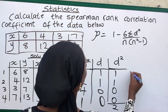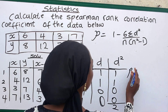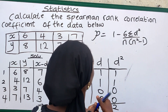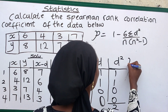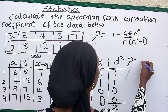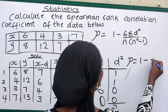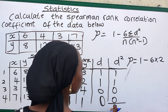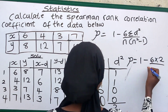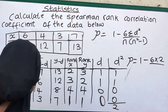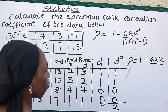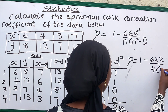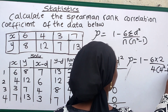We can now input our parameters into the formula. The correlation coefficient is equal to 1 minus 6 multiplied by 2 — since our summation of D squared is 2 — divided by N times N squared minus 1. Our N is 4, so we have 4 multiplied by 4 squared minus 1.